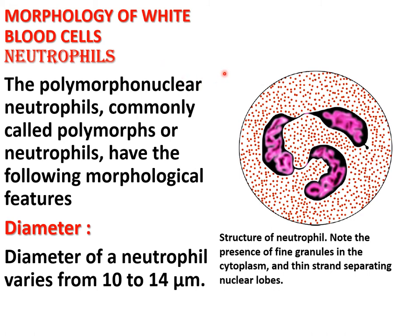Neutrophils are known as polymorphonuclear neutrophils, also known as polymorphs or neutrophils. Their morphological features include a diameter that varies from 10 to 14 micrometers. The granules of neutrophils take both acidic and basic stains, and the nucleus of the neutrophil has 2 to 5 lobes.